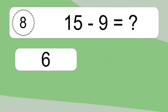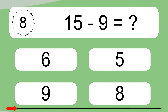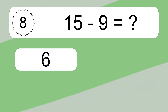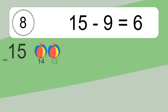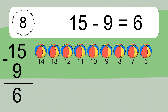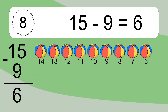15 minus 9 equals what? 15 minus 9 equals 6. Let's count it. 14, 13, 12, 11, 10, 9, 8, 7, 6.